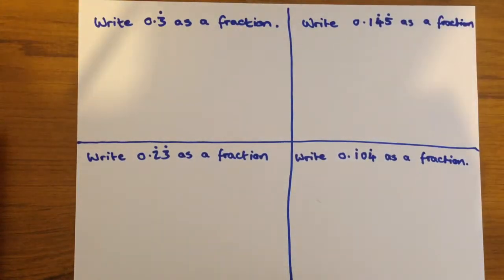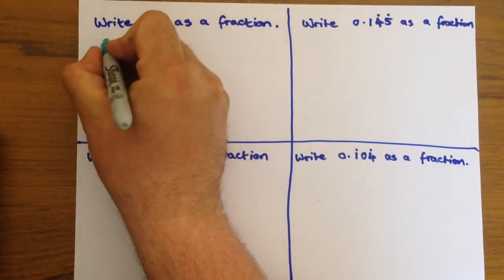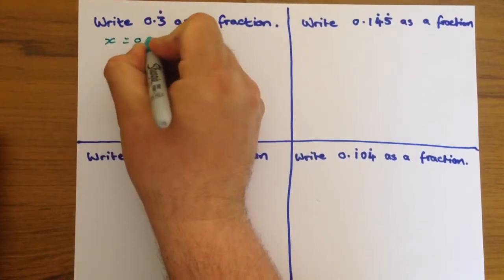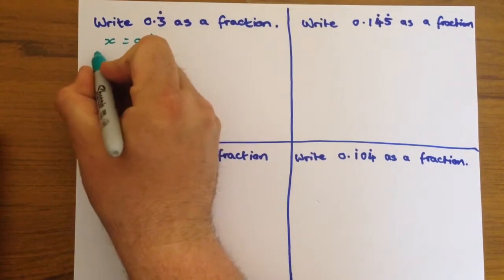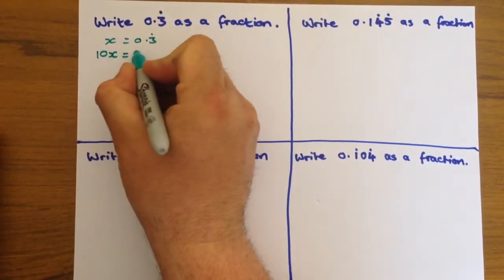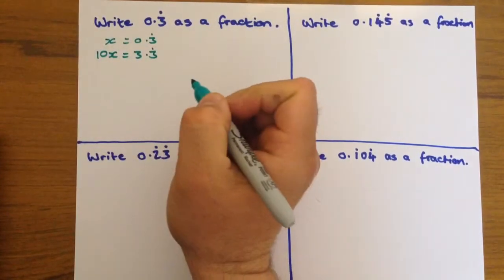This video is going to take a quick look at how to write recurring decimals as fractions. First of all, we let x equal 0.3 recurring, so then we say 10x equals 3.3 recurring.